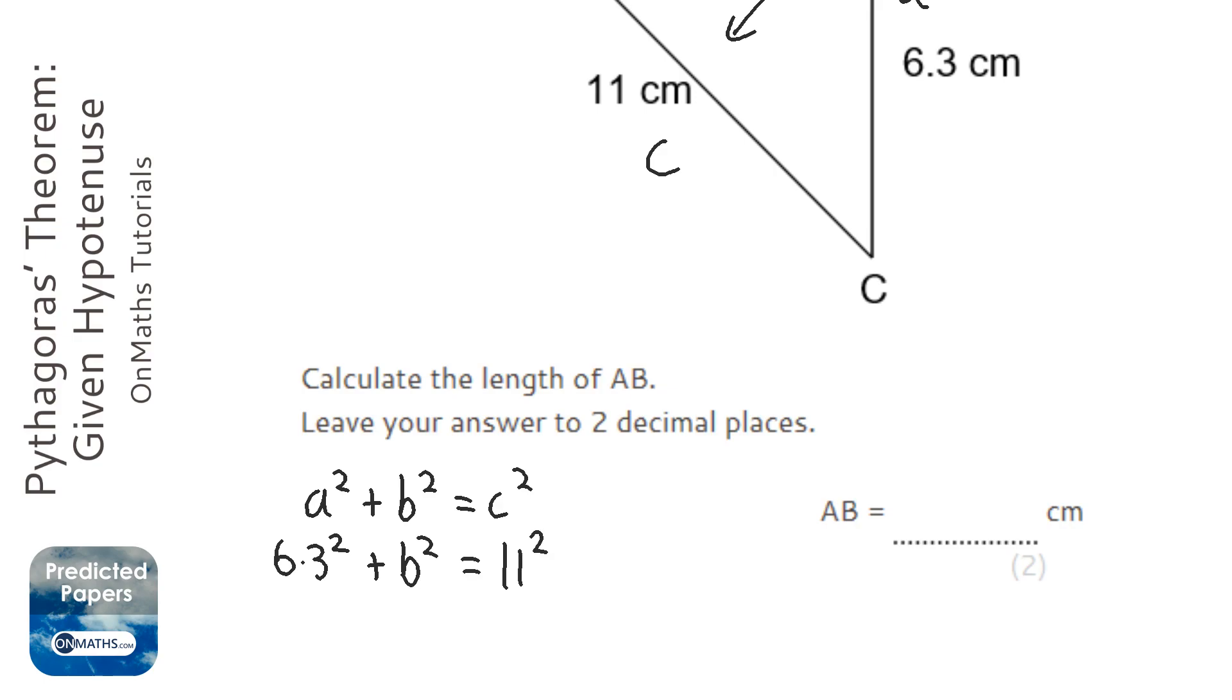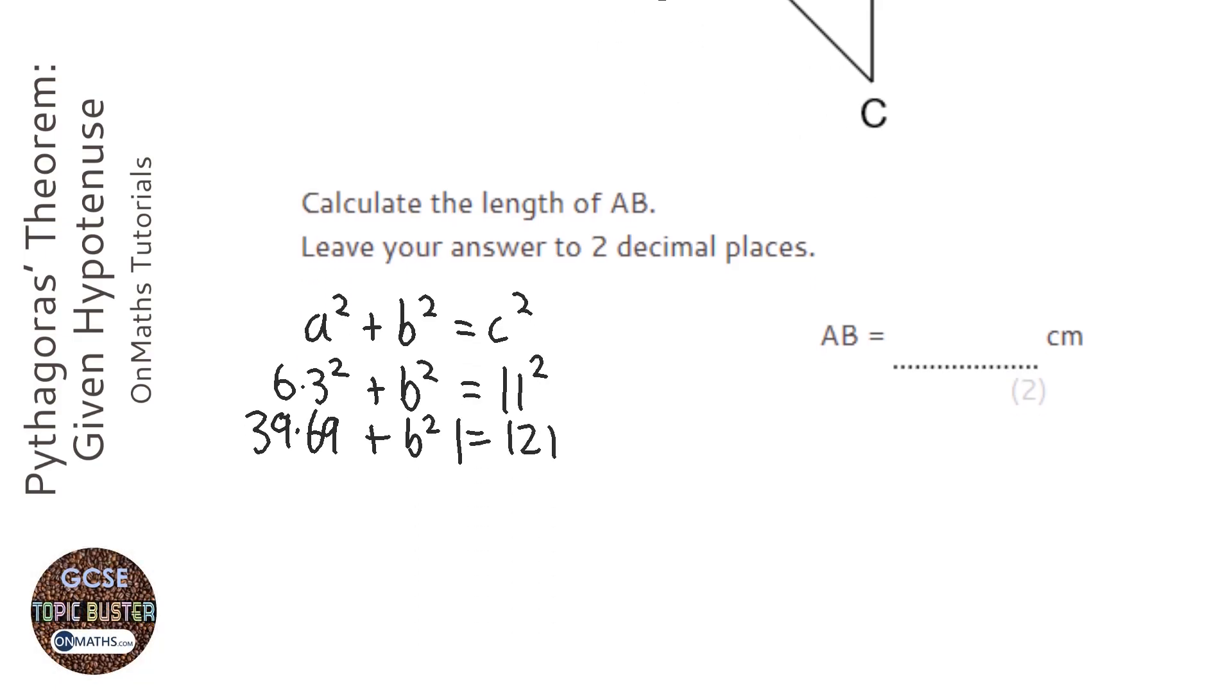And get my calculator. 6.3 squared is 39.69 and 11 squared is 121. So if I put my lines in, I can take away 39.69 from both sides.